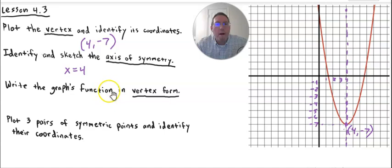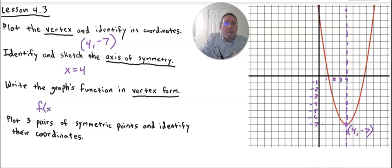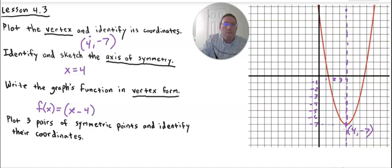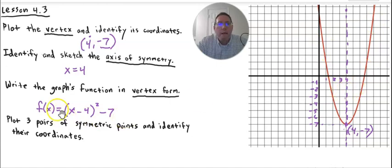Now we're going to write the graph's function in vertex form. This is a positive curve, so we're not going to put a negative in front. We write f(x) = (x − 4)² − 7. The x-coordinate is positive four, so we put minus four inside. And the y-coordinate is negative seven, so we put minus seven outside. The vertex form of this parabola is f(x) = (x − 4)² − 7.